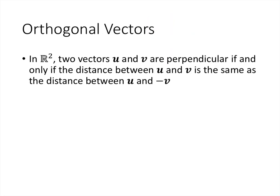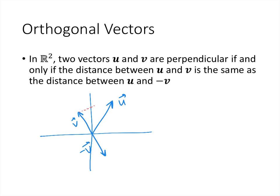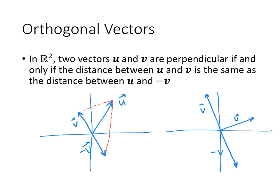In R^2, two vectors are perpendicular if and only if the distance from u to v equals the distance from u to negative v. If the vectors are not perpendicular, the distance from u to v and from u to negative v will differ. But if we draw u and v so that they are perpendicular, and negative v points in the opposite direction with the same length, then the distance from u to v equals the distance from u to negative v. This geometric principle extends to any number of dimensions.